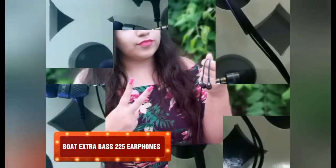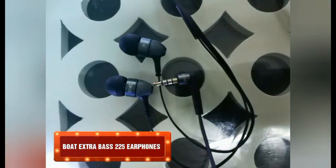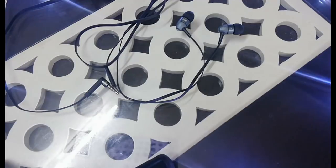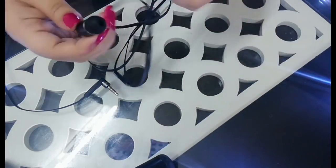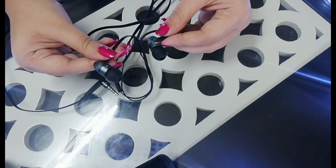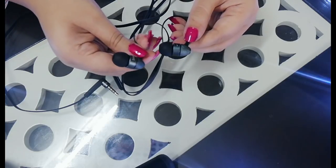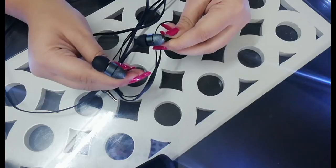Our next price segment leads to 600 bucks. Now here we would suggest you Boat Extra Bass 225 earphones. The build of these earphones is really nice and the plastic material used and the flat shape of the wire helps these to be tangle free. You can easily put these in your ears as it comes with different size of ear pieces.